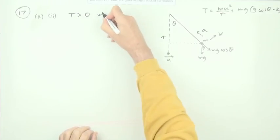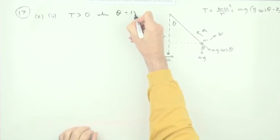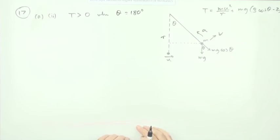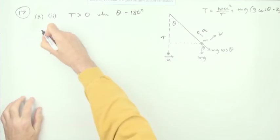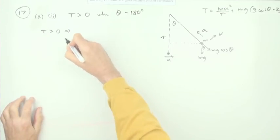So the condition here would have to be there's still some tension in the string when the angle gets to 180 degrees. That would be the simpler way, because then you could just use this equation directly instead of having to think of what the velocity would need to be.